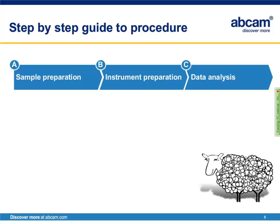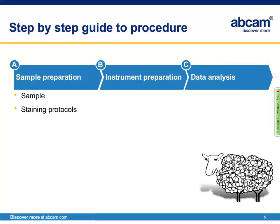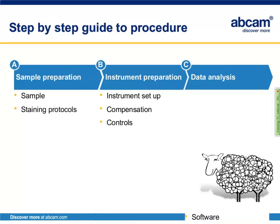Flow cytometry is a three-step process: (A) proper sample preparation, (B) preparation of the instrument, followed by (C) the data analysis step. Today I would like to point out what is most important for each of these steps — the sample preparation and staining protocols, how to set up the instrument including the compensation process and required controls, and how data are usually analyzed and displayed.